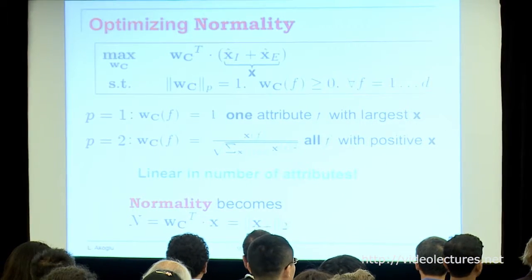The solution is very easy. We introduce a vector computable from the data. For L1 normalization, the solution picks up the attribute with the largest positive value in this X vector. For L2 norm, it picks all positive values. So it's linear in the number of attributes — a very fast solution. Because subgraphs are small, scalability in subgraph size isn't the concern; you're interested in scalability in number of attributes because you may have millions of them. So this scales really well. The normality under L2 becomes the L2 norm of the X vector induced on the positive values.